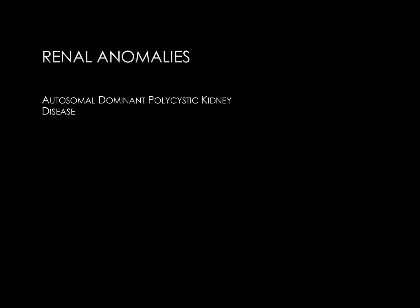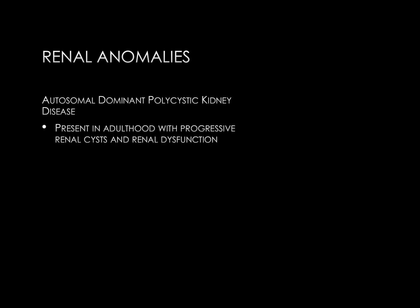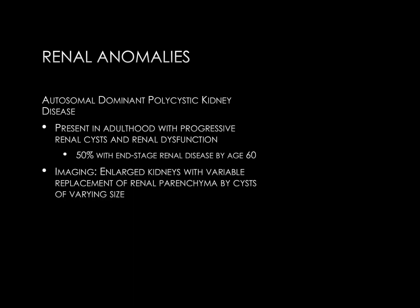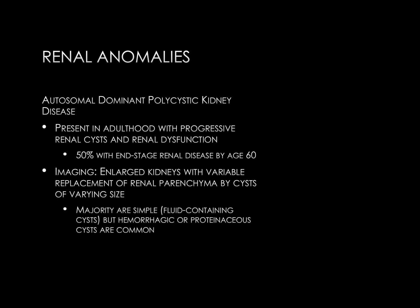The next renal anomaly is autosomal dominant polycystic kidney disease, which typically presents in adulthood with progressive renal cysts and renal dysfunction. 50% of patients will have end-stage renal disease by the age of 60. On imaging, these are often markedly enlarged kidneys with variable replacement of the renal parenchyma by cysts of varying sizes. The majority of cysts are simple, but hemorrhagic or proteinaceous cysts can also occur.